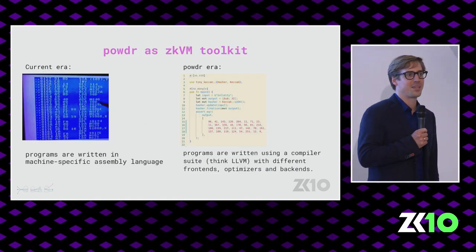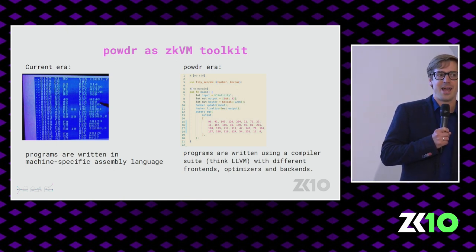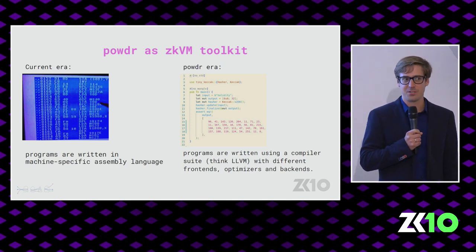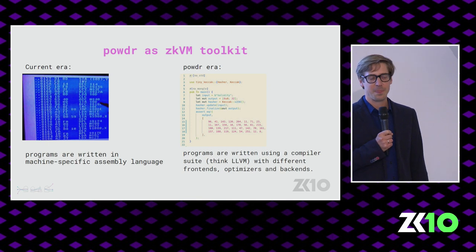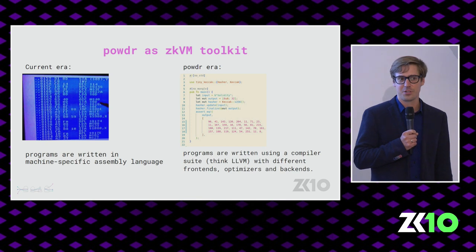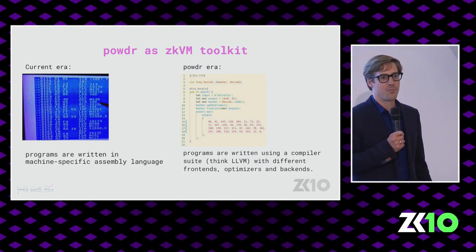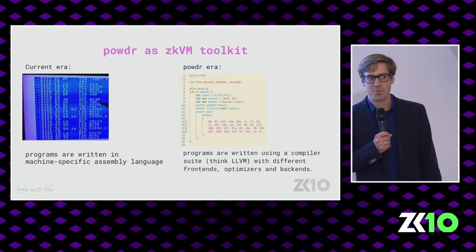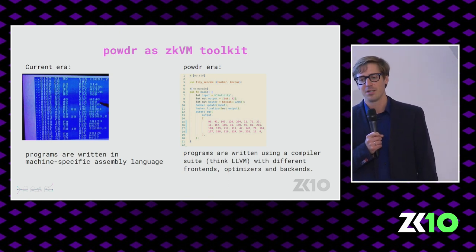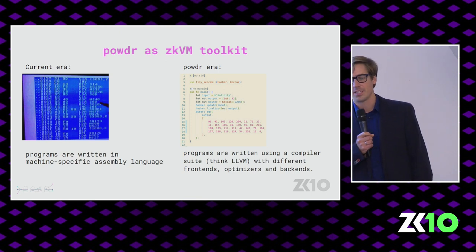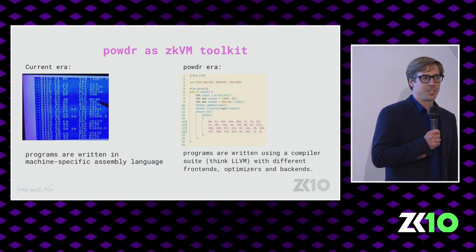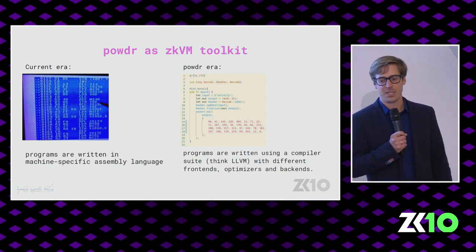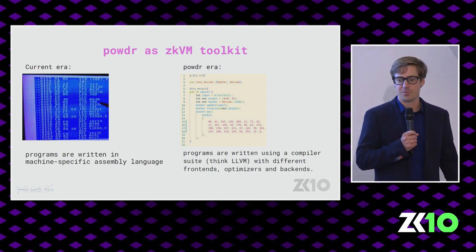If I may make that analogy, we are currently at a stage where computer game programming was in the 1980s. Games were written for a specific machine, usually in an assembly language specific to that machine. When you want to port a game to a different computer, you have to rewrite the whole game or large parts of the assembly. Powder wants to change that — Powder wants to be an LLVM for ZK VMs: a system that allows you to freely change the front-end and back-end, write ZK VMs in high-level languages like Rust, and run optimizations and analysis.